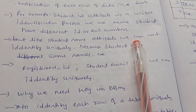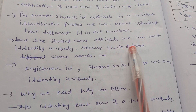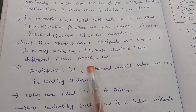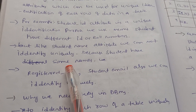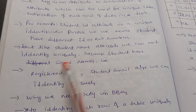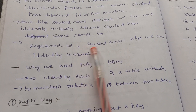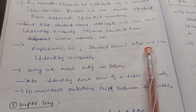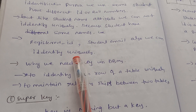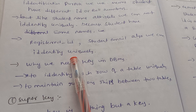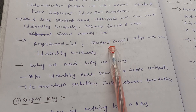Like a student name attribute, we can't identify uniquely because students can have the same names. However, registration ID and student email can also be used to identify uniquely. So student roll number, registration ID, or student email can each be used as a key.